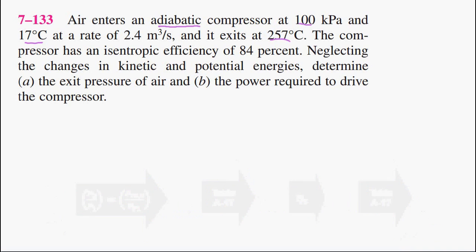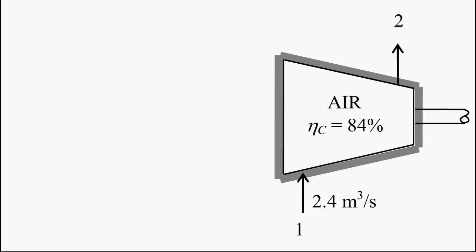The next step is to come up with a schematic and start labeling the values that we have from the question. At state 2, the outlet temperature is 257 degrees Celsius, or in Kelvin, the absolute temperature is 530.